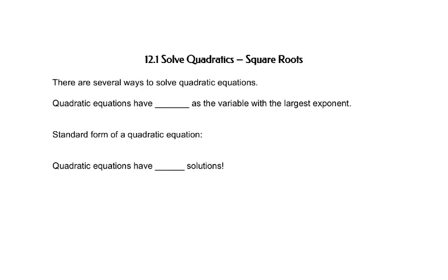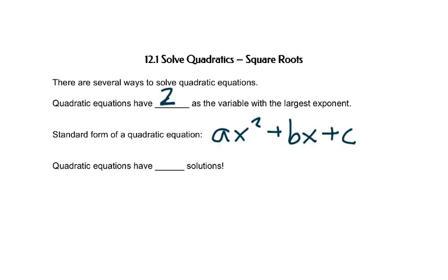In this chapter, we'll look at how to solve quadratic equations. There are several ways to solve quadratic equations, but first of all, we need to understand that quadratic equations have an exponent of 2 as the highest exponent. The standard form of a quadratic equation is ax² + bx + c = 0, which we talked about earlier in this course.